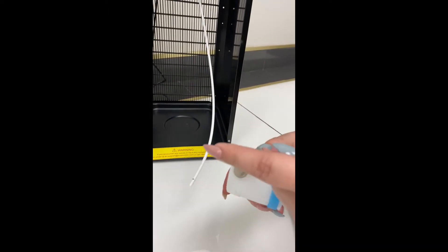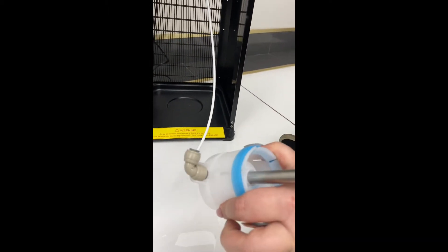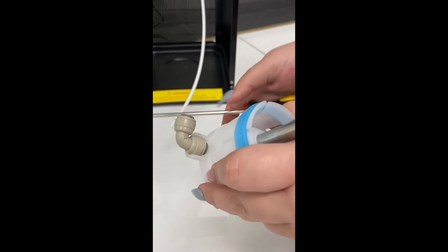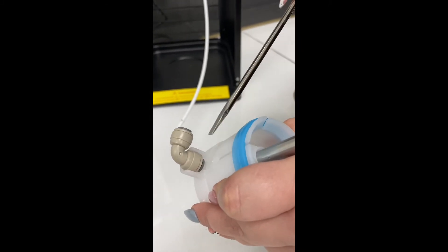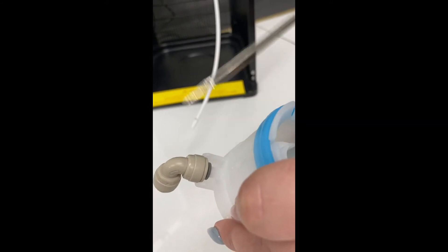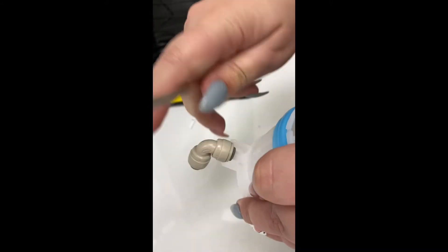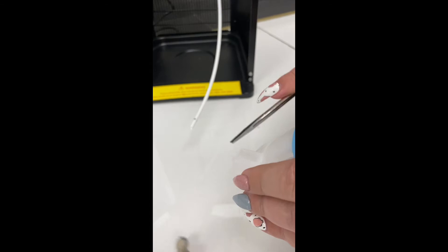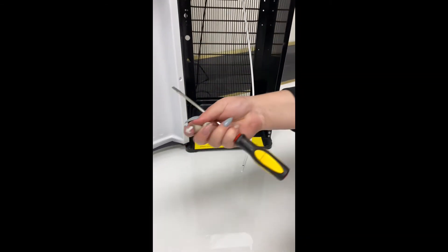Now we're going to go to the probe. I like to turn the probe upside down so I can access this little ring here. Once again, using that flathead screwdriver, I like to push it in and slide it off. Once it's out here at the end, you can give it another little push, and your elbow connection will come off.